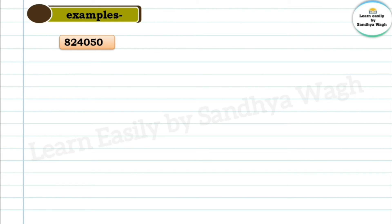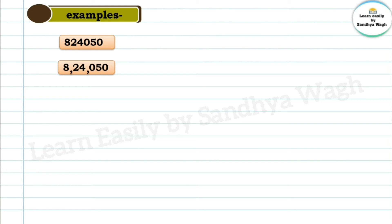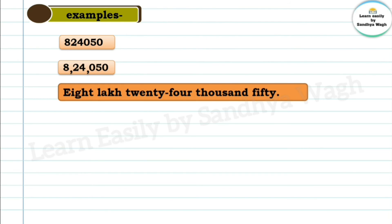The next period is thousands, which has 2 places — thousands and ten thousands — so we separate 2 and 4. Then the lakhs period has 2 places — lakhs and ten lakhs — and here we have the number 8. So we write: 8, then 24, then 050. Placing commas in between, we read this number as 8,24,050.